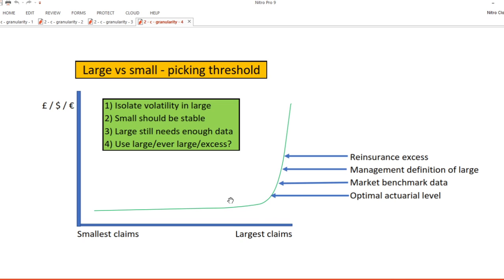If I pick a point around about the point of inflection, then I'll meet principles one and two. My small triangle will be stable because I've got lots of similar claims, and the volatility from these suddenly big claims will be isolated in the large triangle. However, I might not have achieved principle three, as I might have too little data in my large triangle. There's no perfect answer here, but I need to get enough data into that large triangle to have enough data to draw reliable trends from it. You may have to reduce the threshold a bit until you get sufficient data of quantity in large. If you start getting more than 75% of your claim amounts in either the small or large triangles, then you might find it's not worth splitting large and small, since one of the triangles won't have enough data to model.